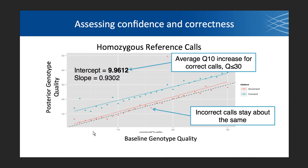For all homozygous reference calls, applying priors from 1,000 Genomes separates correct calls from incorrect calls. Running a linear regression through the correct calls, the slope stays about the same but most calls get a boost of about Q10 — a big improvement in your correct genotype calls. For incorrect calls, they don't get a quality boost at all and stay about the same. We don't want to elevate the quality of incorrect calls, and they're not being biased to look more confident than they are.